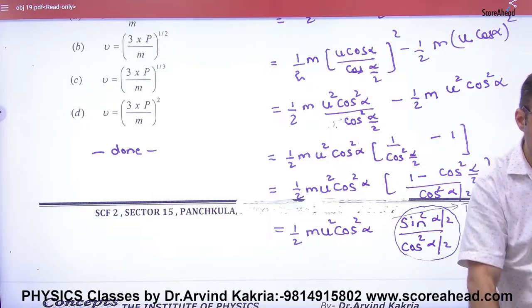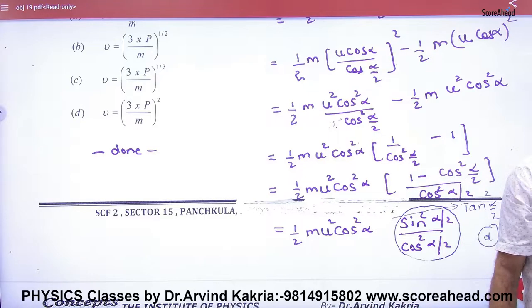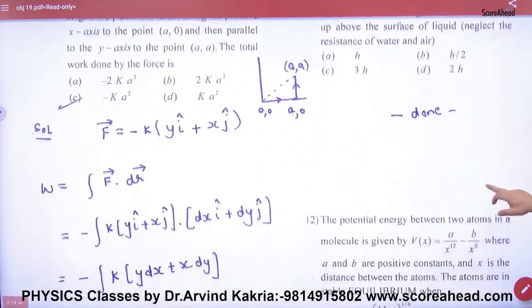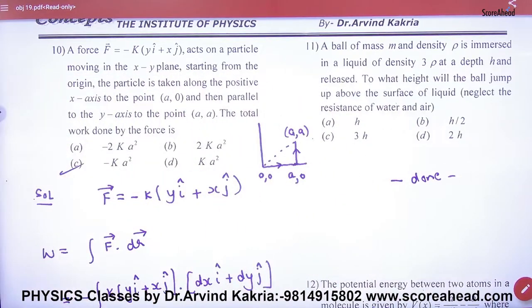And here cos square alpha by 2. This term common: one half m u square cos square alpha. This term, LCM: 1 minus cos square alpha by cos square alpha equals sin square by cos square equals tan square. Option number d will come. Not for medical, not for NCERT, not for medical, only for mains. Understand, this will not come to medical. So the idea will come how to do this.